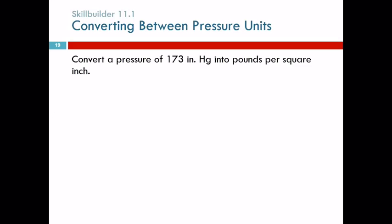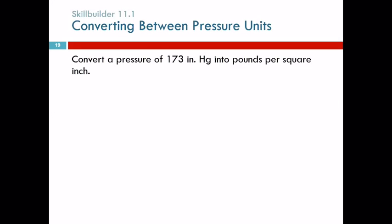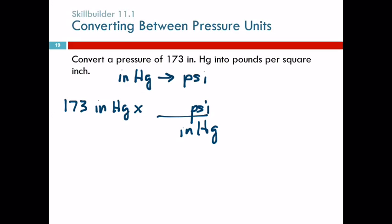Let's convert a pressure of 173 inches of mercury into pounds per square inch. Maybe we should go back to the table real quick and see what we need. Pounds per square inch, 14.7 is equal to 1 atmosphere equal to 760 millimeters of mercury equal to 29.92 inches. So here we have inches of mercury and we're converting to go directly to PSI. 173 inches of mercury. So we got PSI on top, inches of mercury on the bottom. We get the numbers from the table.